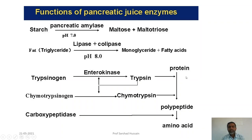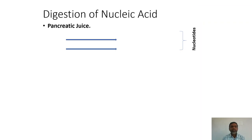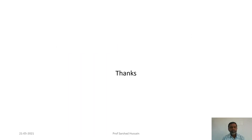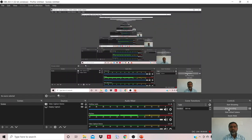Once trypsin is formed, it hydrolyzes proteins into polypeptide chains. Carboxypeptidase then acts on polypeptide chains, breaking down complex protein molecules into amino acids. Amylase converts starch into maltose and other saccharides; lipase converts fats into monoglycerides and fatty acids. Nucleic acid-digesting enzymes are also present: deoxyribonuclease converts DNA into deoxyribonucleotides, and ribonuclease converts RNA into ribonucleotides.